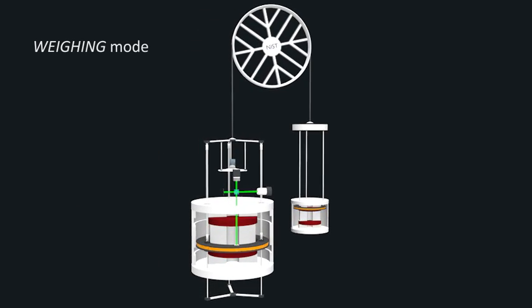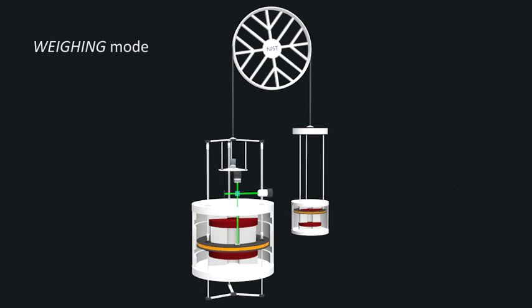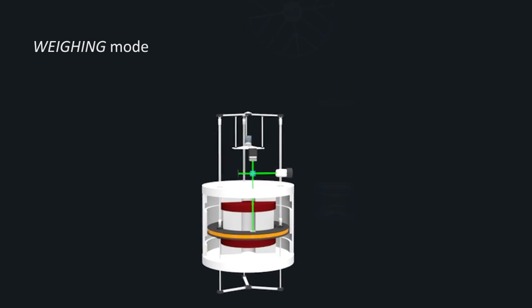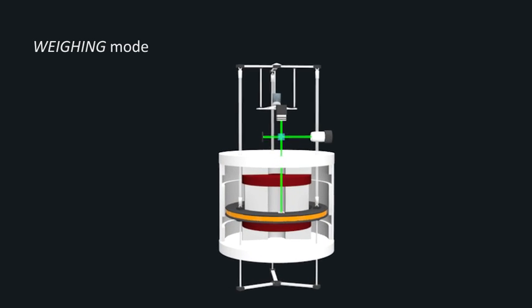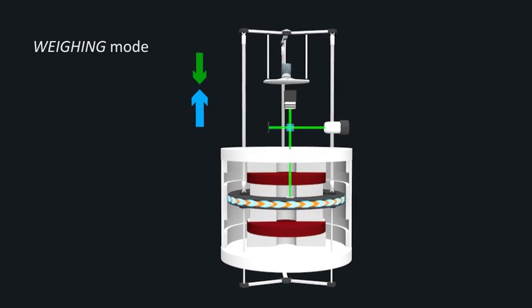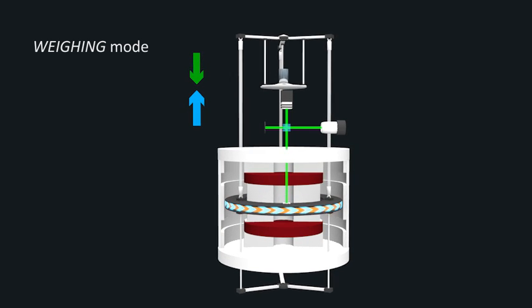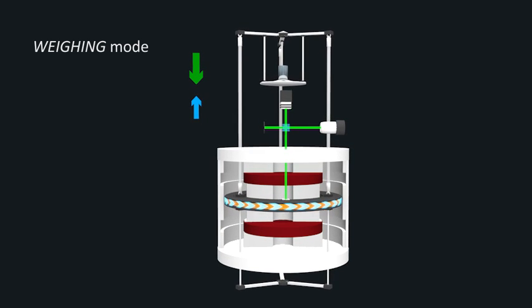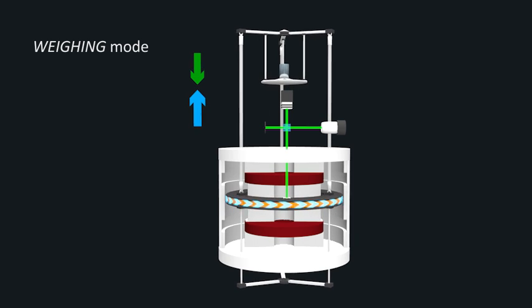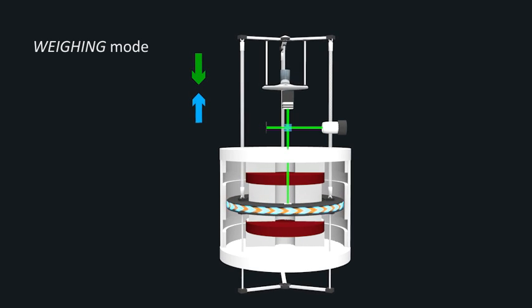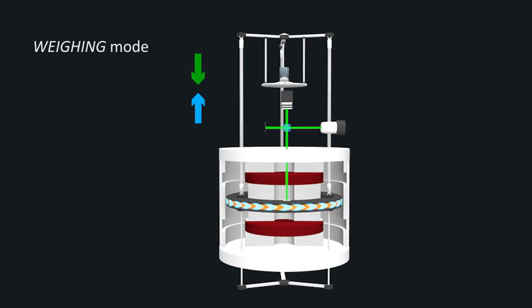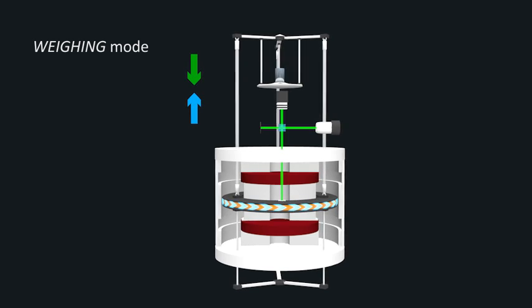In weighing mode, a test mass is placed onto the platform on the same side of the balance as the coil. An electrical current runs through the coil, producing an upward force that is proportional to the current. By carefully adjusting the current, the upward force is tuned until it exactly offsets the weight of the test mass, and the system reaches equilibrium.